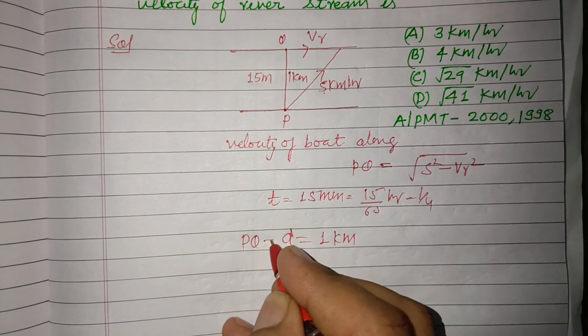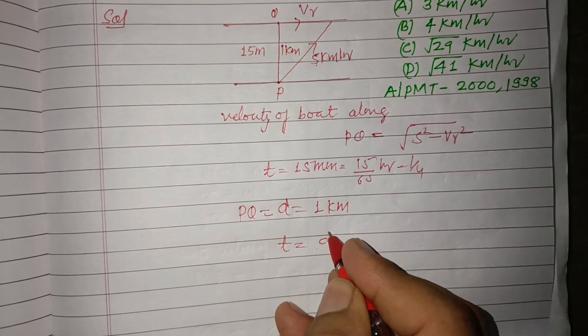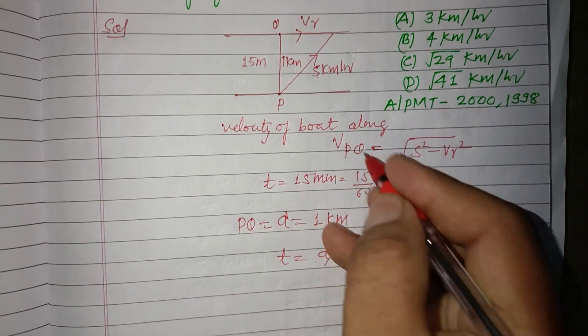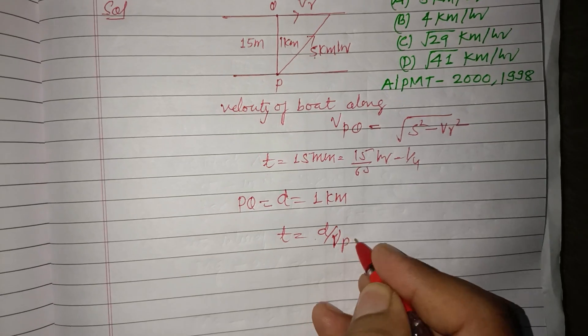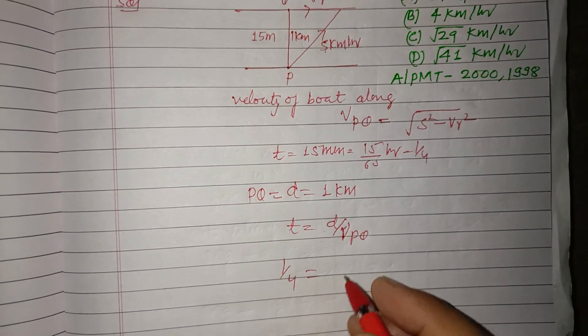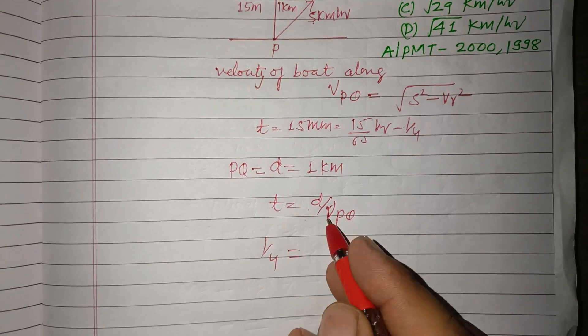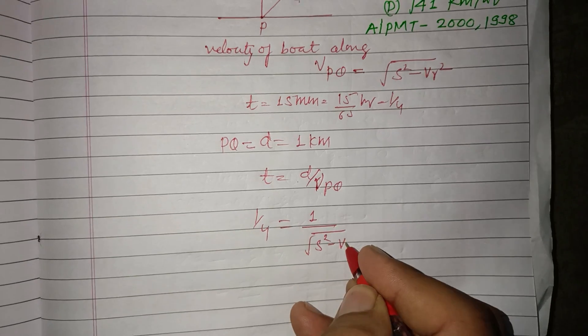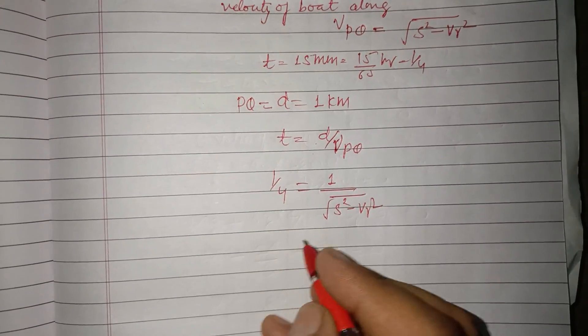So t equals d over velocity along PQ. This is one by four, and this is one upon square root of 5 square minus Vr square. Squaring both sides.